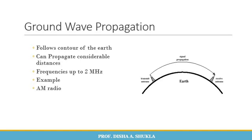As you can see in the figure, ground wave propagation follows the contour of the earth. Frequencies up to 2 MHz can be transmitted this way. An example of ground wave propagation is AM radio.